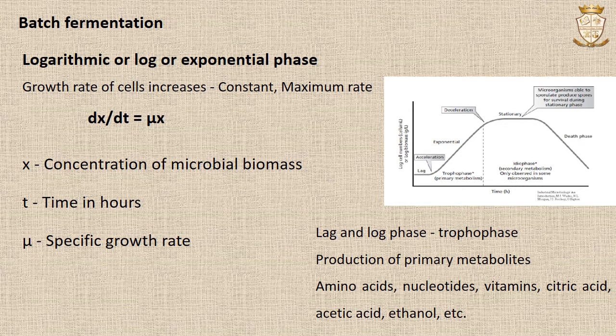The production of primary metabolites occurs during the log phase, and this phase is also known as the tropophase. Examples of primary metabolites are amino acids, nucleotides, vitamins, citric acid, acetic acid, ethanol, etc.